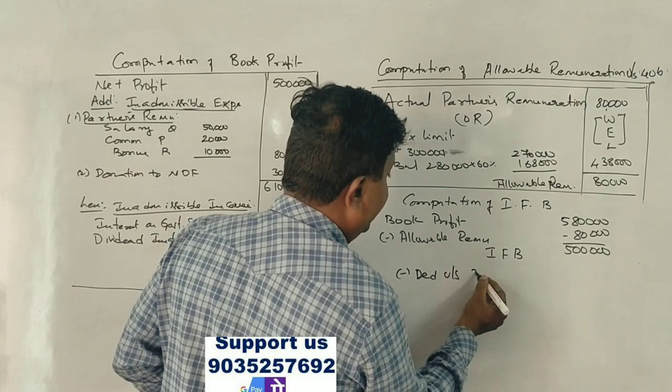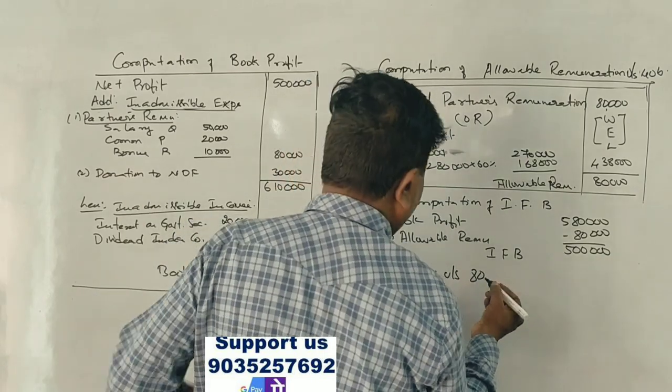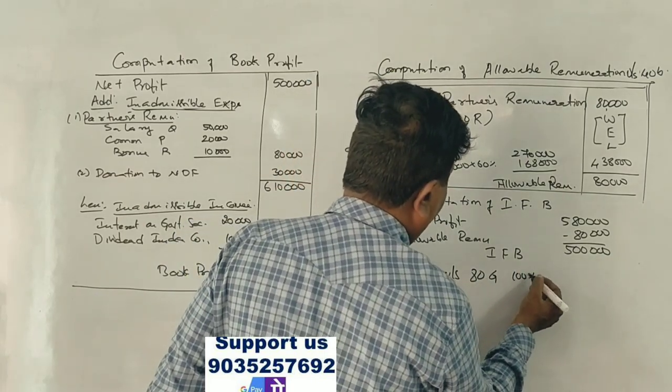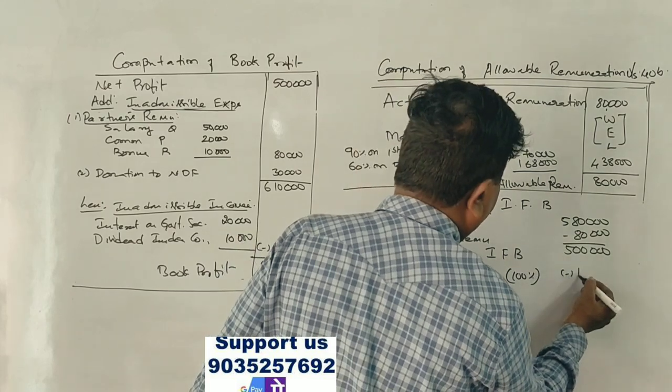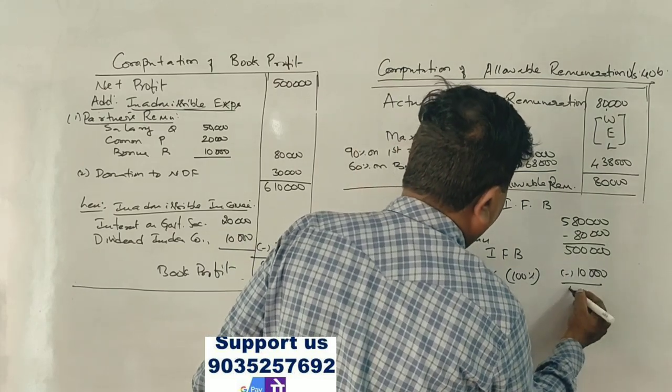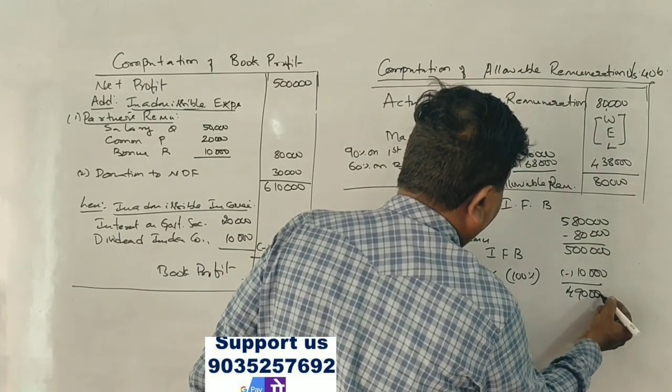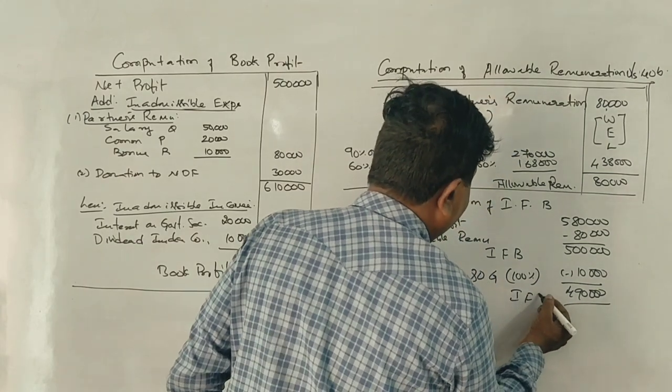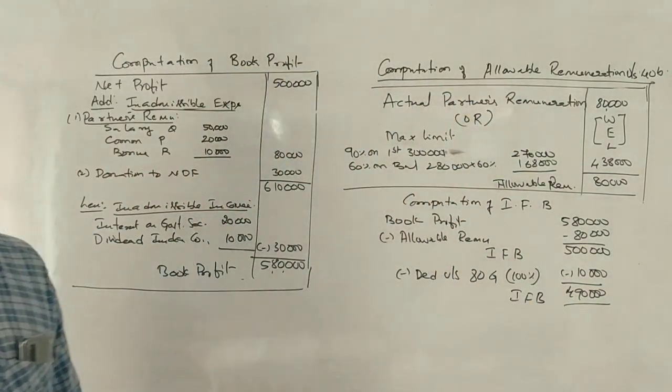Now less deduction under section 80G - donation of 30,000 rupees. 100% amount, so minus 30,000. Final income from business is 4 lakh 70,000.